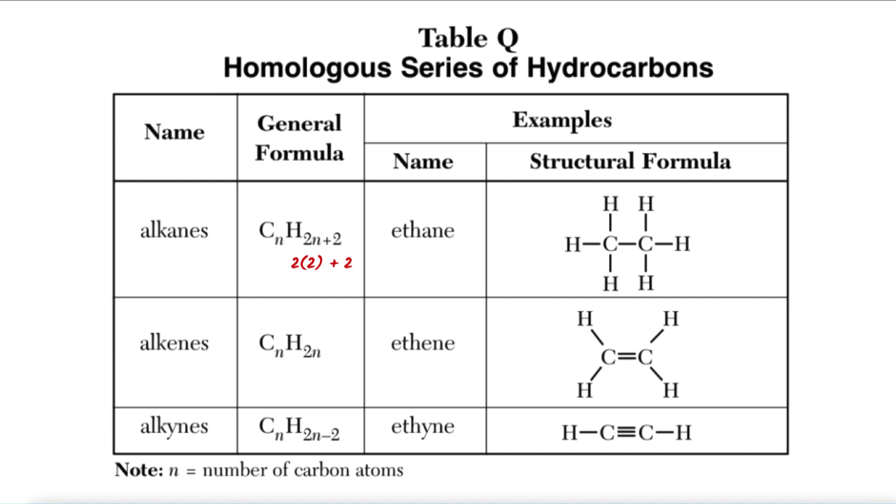So notice for ethane, the chemical formula would be C2, because there are two carbons in ethane, and 2 times 2 is 4 plus 2 is 6. So that is how I would use the name ethane to get the chemical formula.